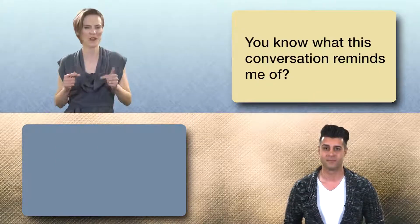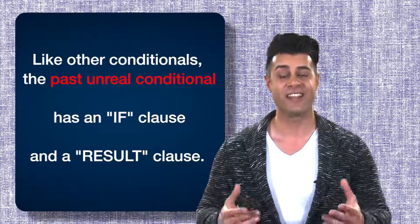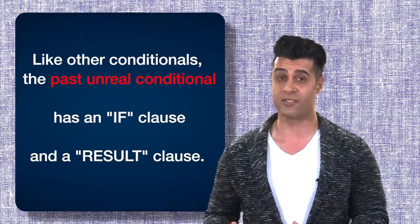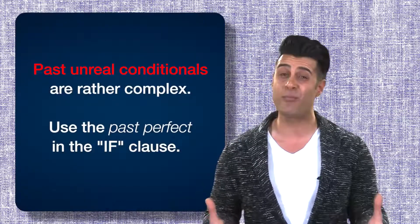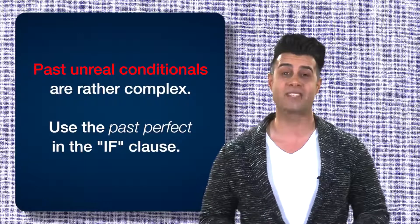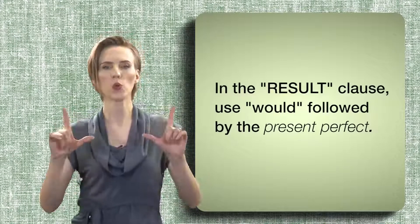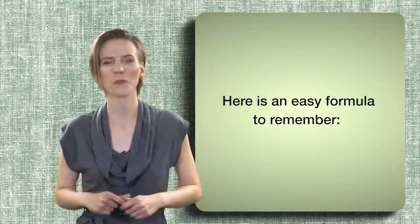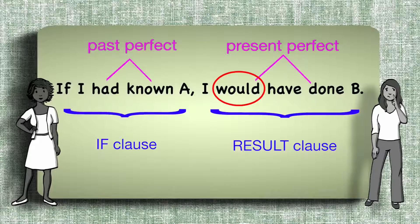You know what this conversation reminds me of? Past Unreal conditionals. Like other conditionals, the past unreal conditional has an IF clause and a RESULT clause. Past unreal conditionals are rather complex. Use the past perfect in the IF clause. In the RESULT clause, use WOULD followed by the present perfect. Here is an easy formula to remember: If I had known A, I would have done B.